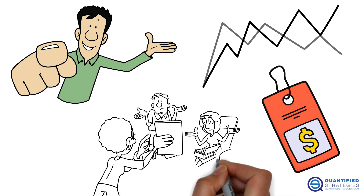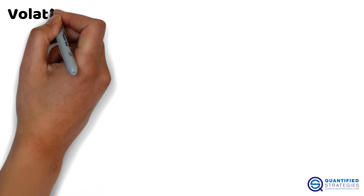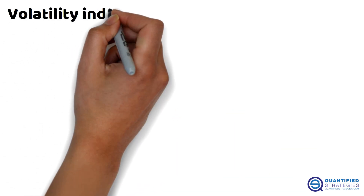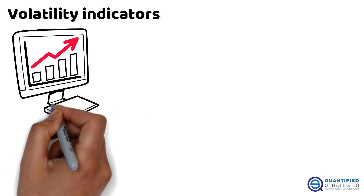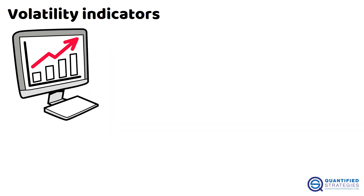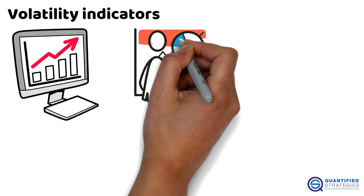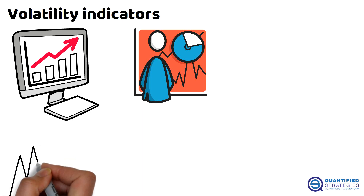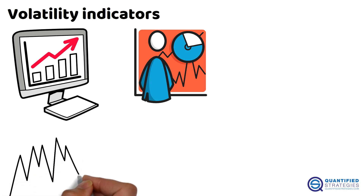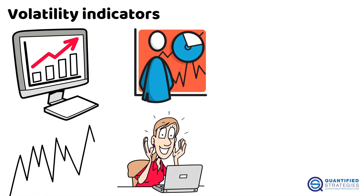So what are volatility indicators? Simply put, they measure how much a stock, index, or market moves up or down over time. High volatility means big price swings — exciting but risky.